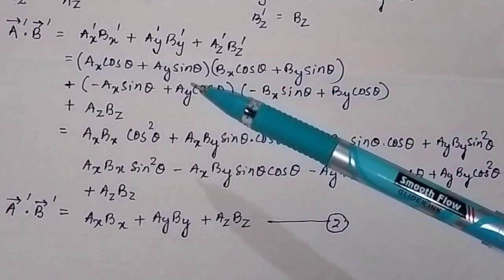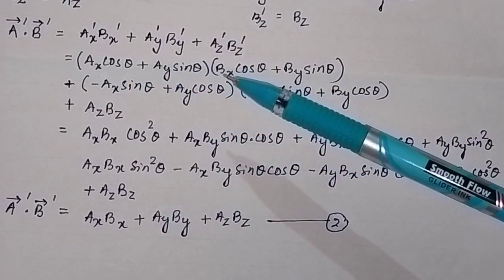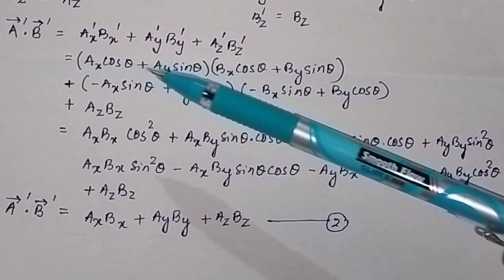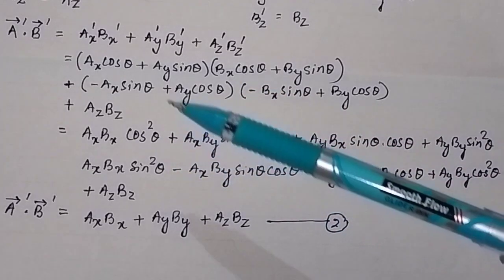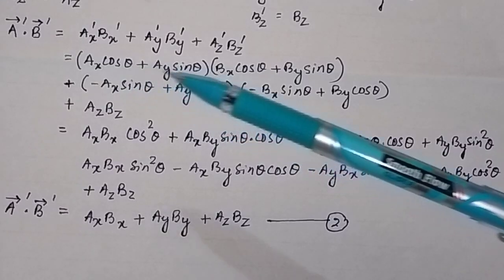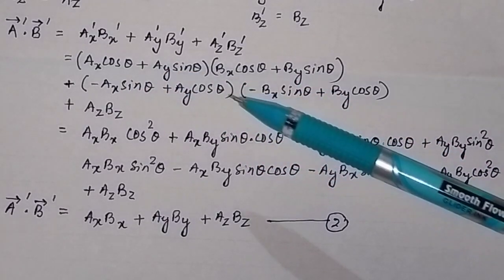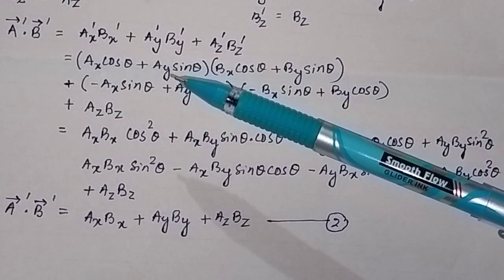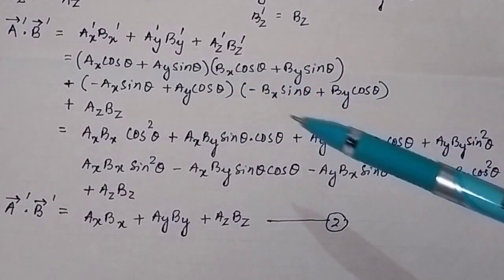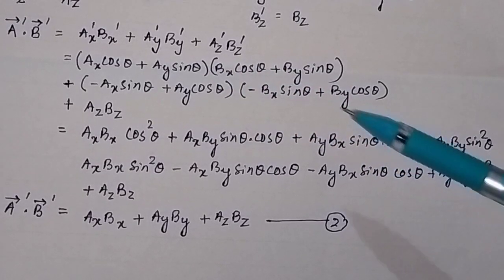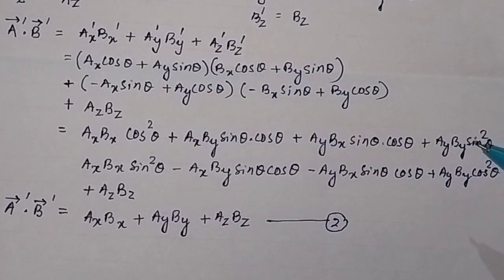After substitution and taking the products: the first product gives AXBX cos²theta, the second gives AXBY sin theta cos theta, the third gives AYBX sin theta cos theta, and the fourth gives AYBY sin²theta.